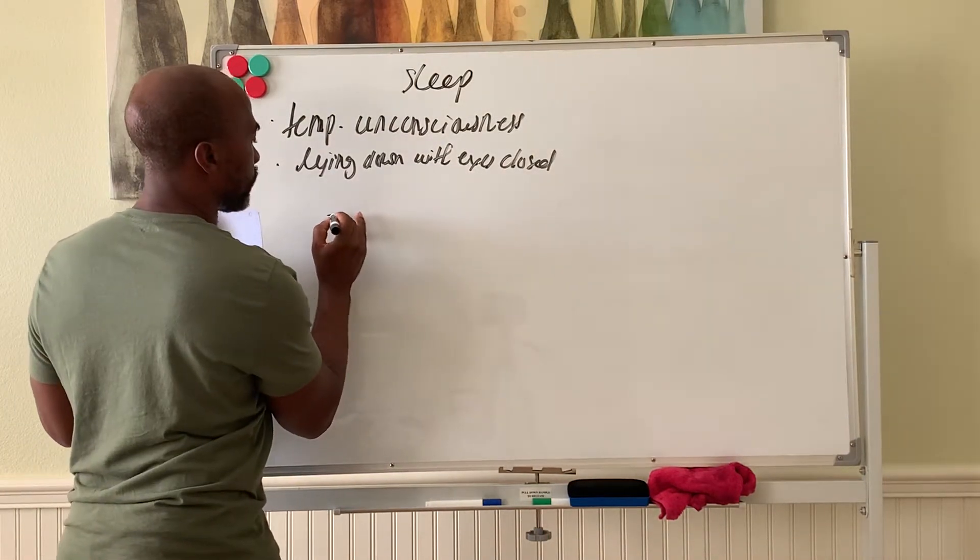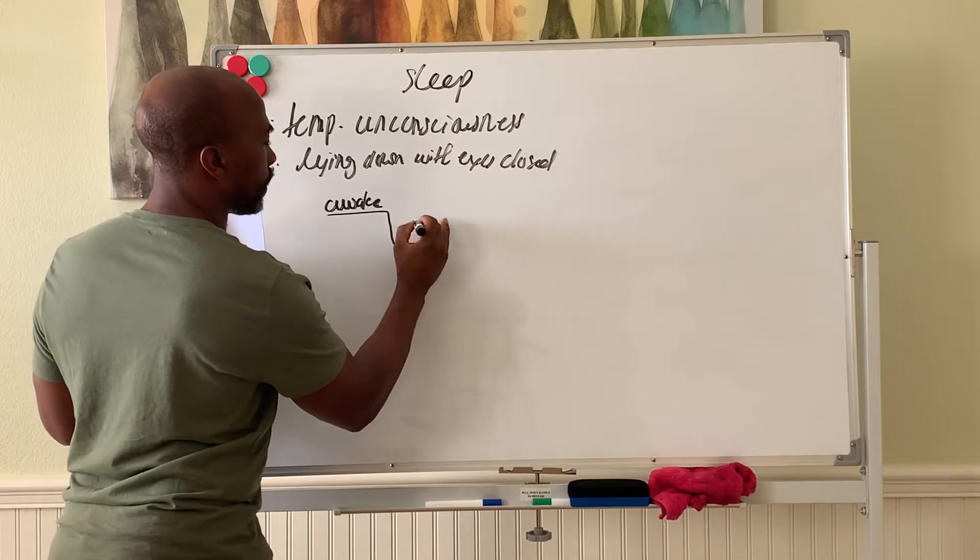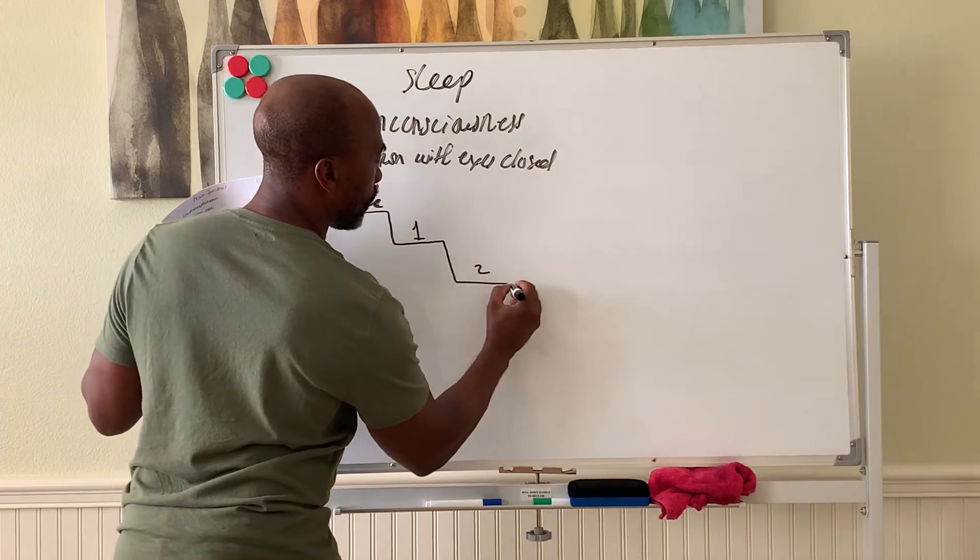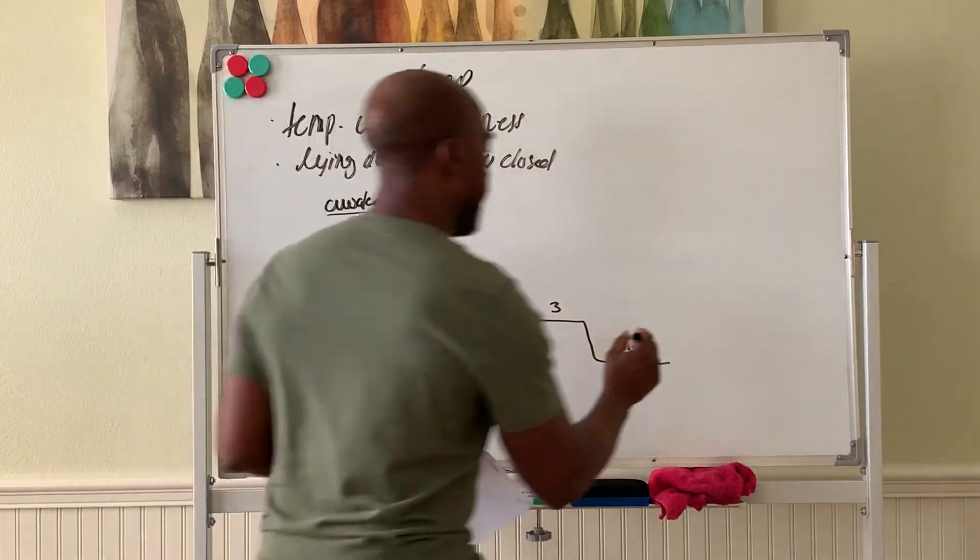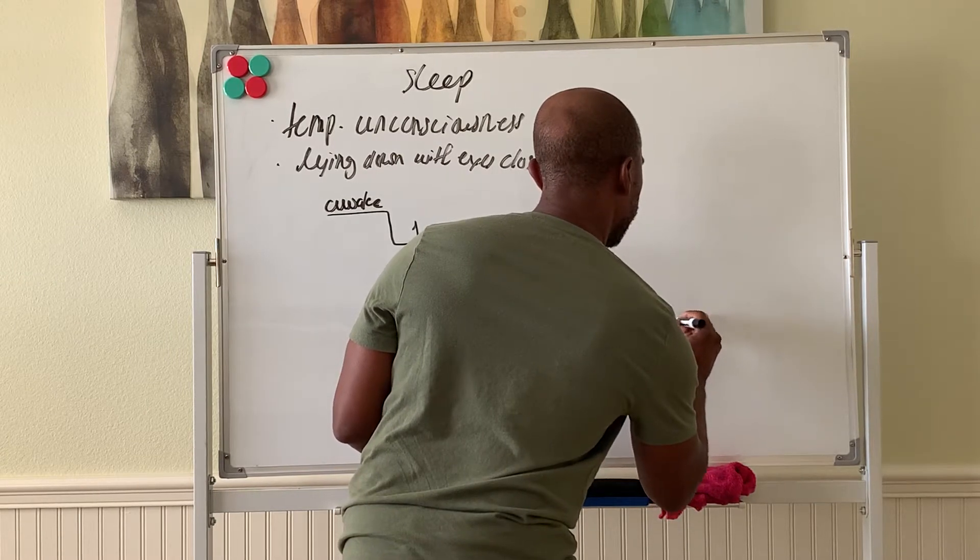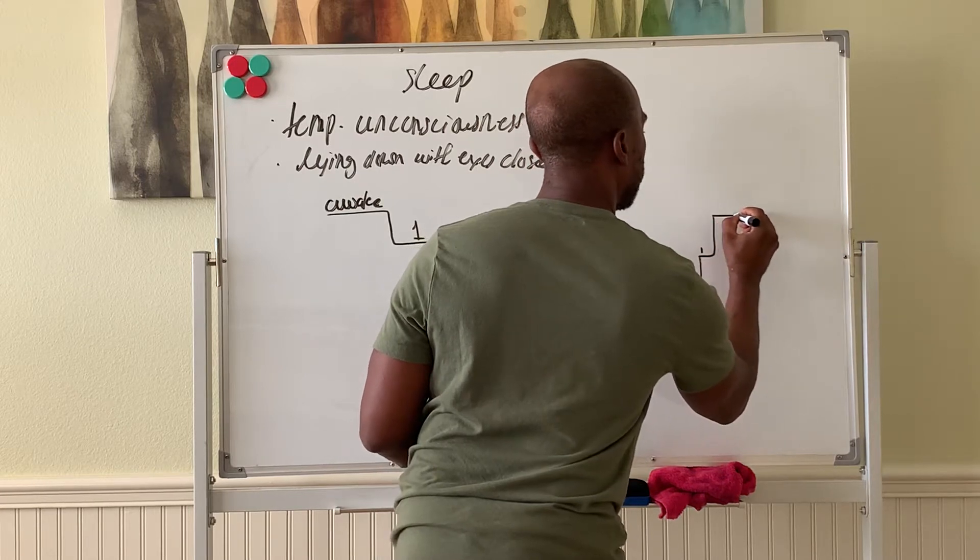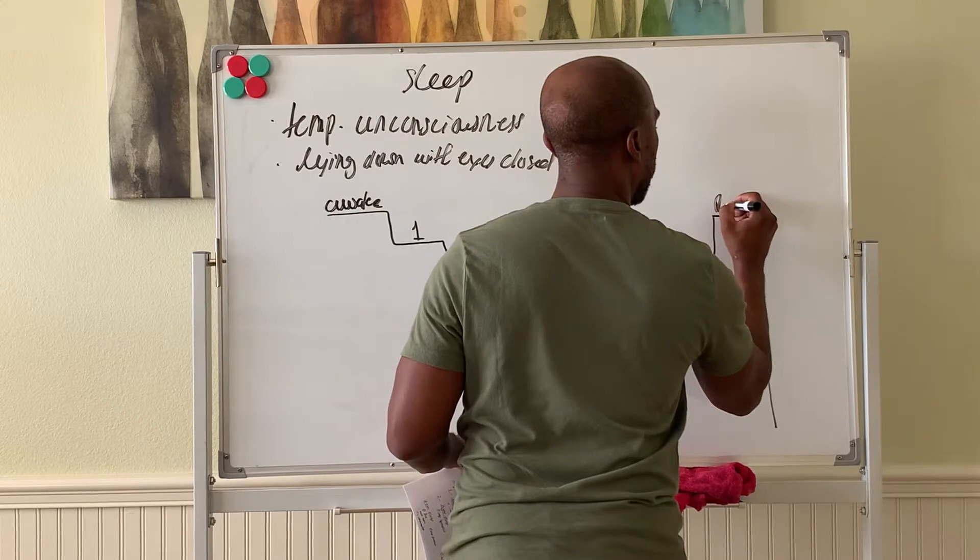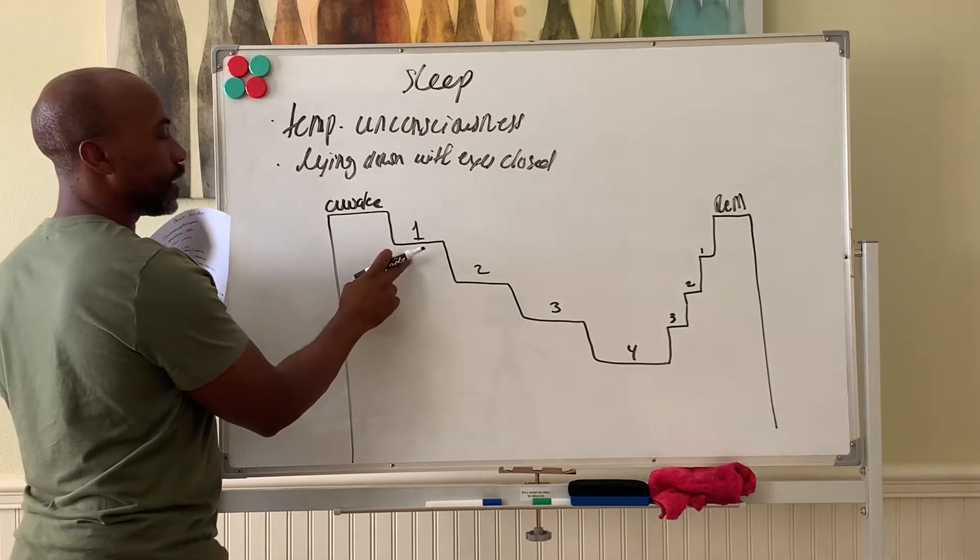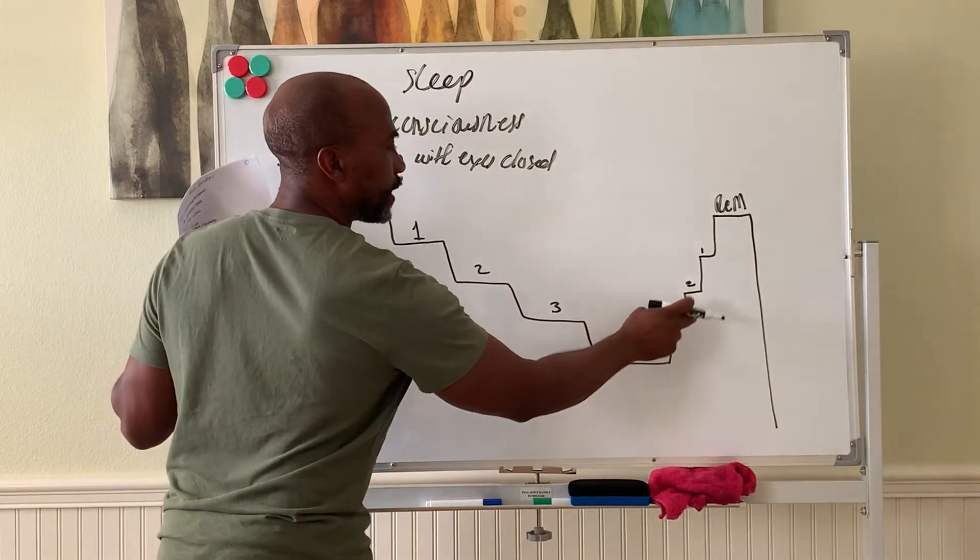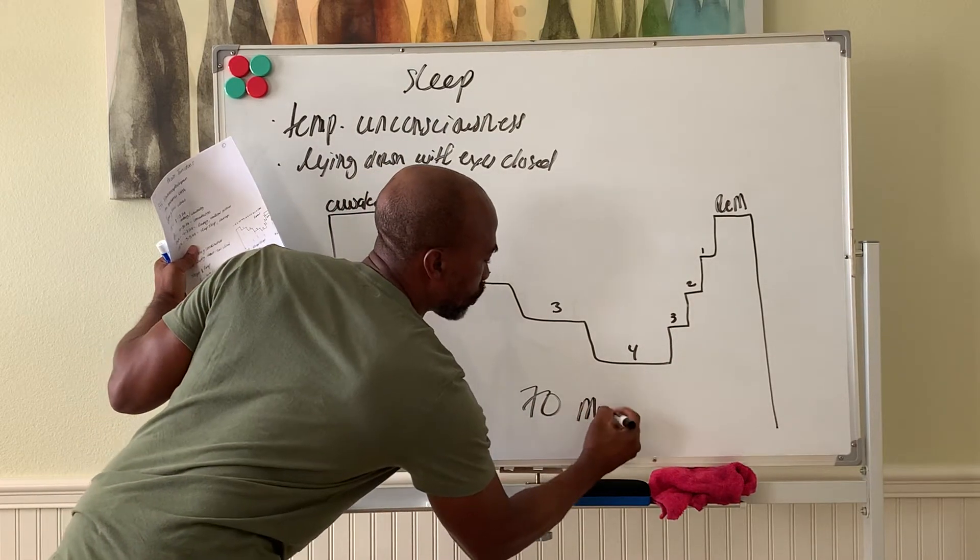You start off here, you're awake, and you drop down into stage one sleep, a little further into stage two, further stage three, then the deepest sleep is stage four sleep. Then you come back up to stage three, to stage two, to stage one briefly, and then into what's called REM sleep. So again, you're awake, you go stage one, stage two, stage three, stage four, back to stage three, stage two, then briefly in stage one, then jump into REM sleep. This typically takes about 70 minutes to get through a cycle.